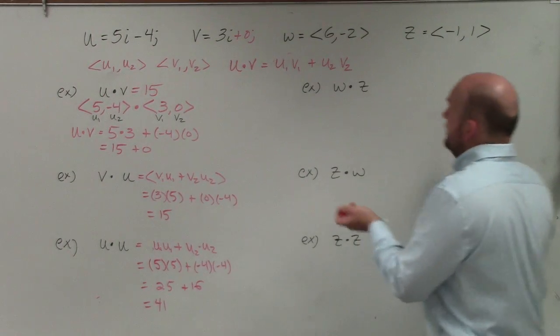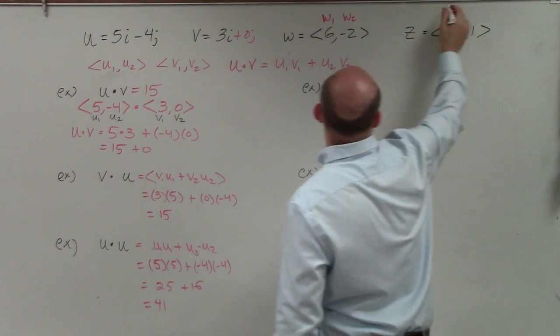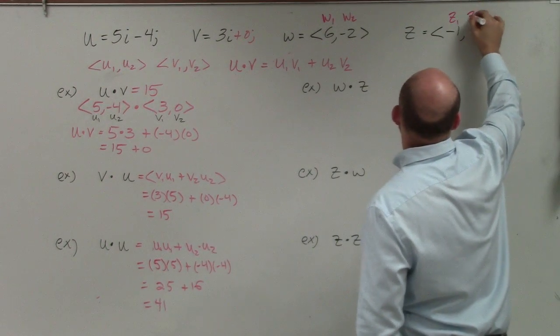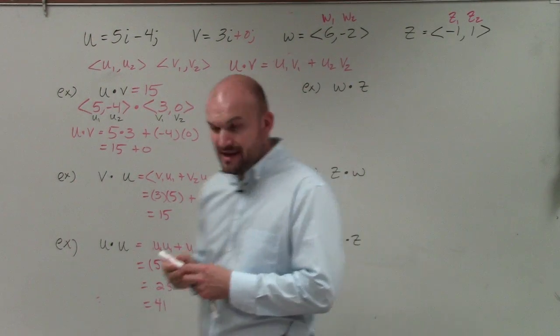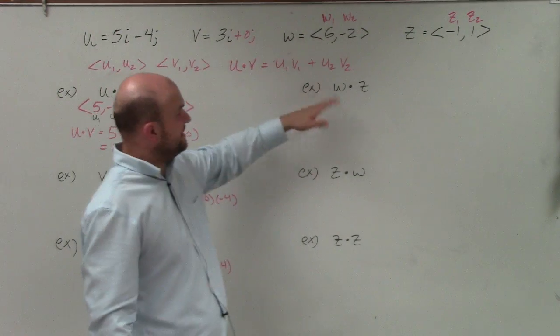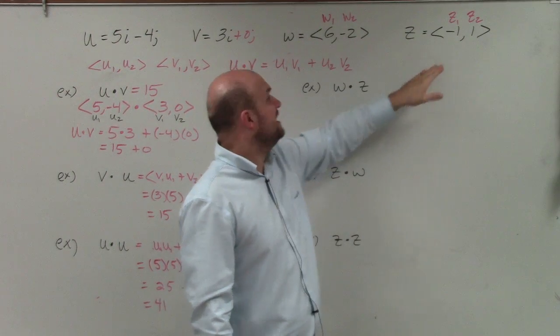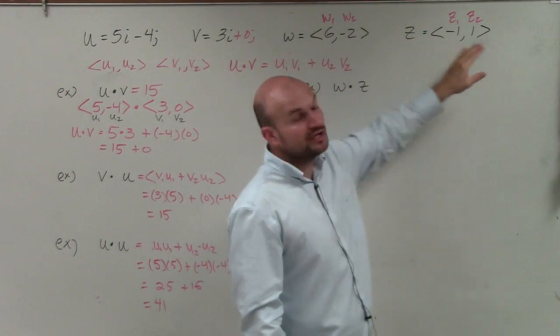So now again, let's go and look over. Now we have these in component forms, so I can just label this as w1, w2, z1, and z2. And now again, we're just going to apply the dot product. And again, it doesn't matter if I'm using u's or v's. You're basically taking the first two components of your vectors, multiplying them, and then adding them to the product of your second two components.